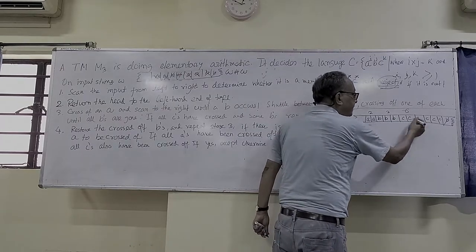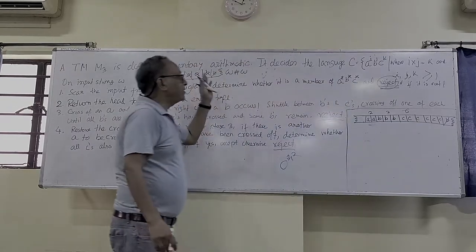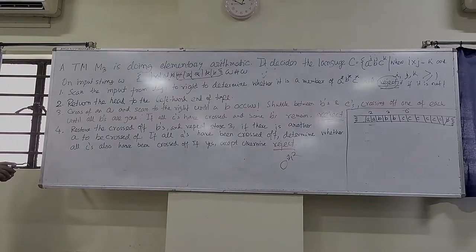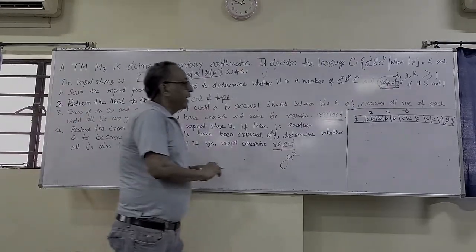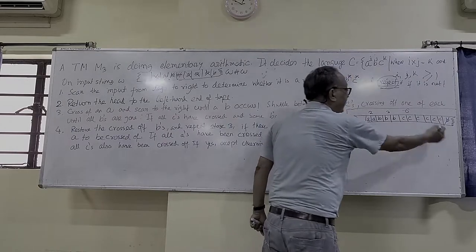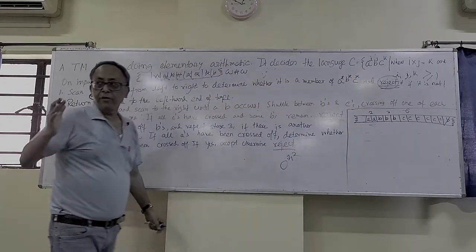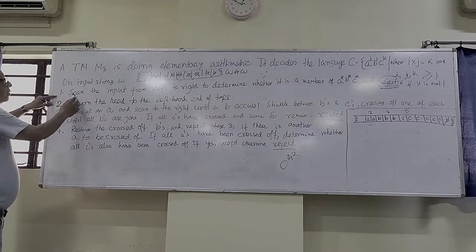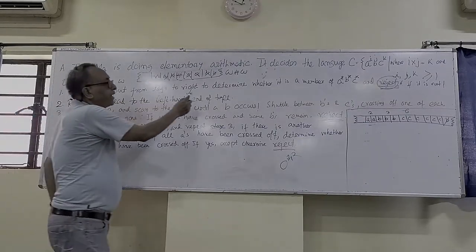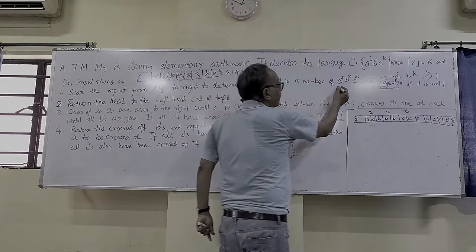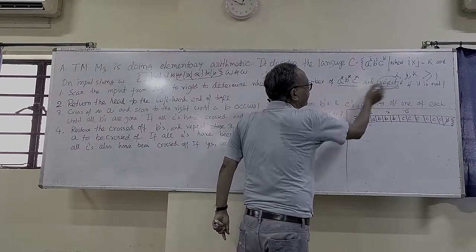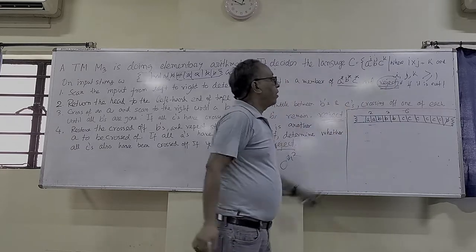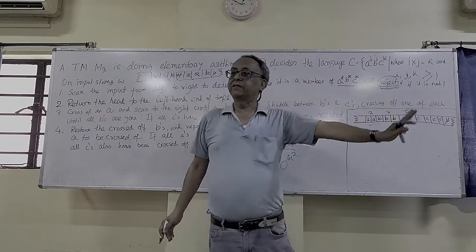So we have 2 A's and 3 B's; we verify whether the count of C's is correct. The first step is to check whether the input is of the form A*, B*, C*. If anything other than A, B, or C is found — say D or a slash — the machine will reject immediately. So first, the head checks from left to right for any character other than A or B. It goes right and comes back.